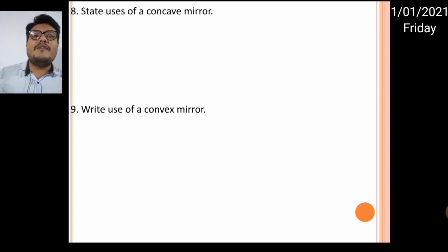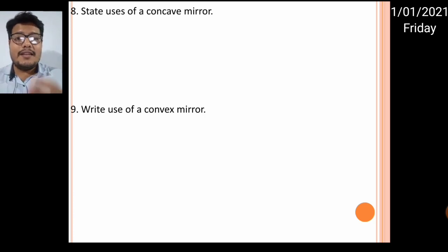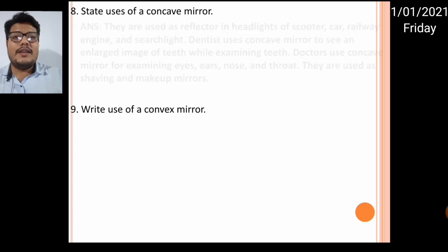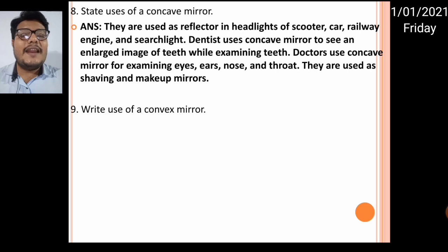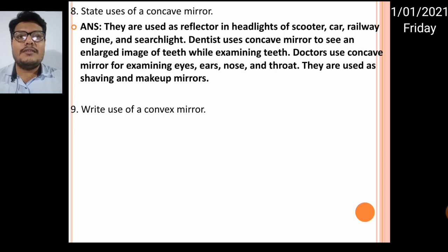State the uses of a concave mirror. Concave mirrors are used as reflectors in the headlights of scooters, cars, and railway engines. They are also used in search lights. Dentists use concave mirrors to see an enlarged image of your teeth while examining. Doctors use concave mirrors to examine the eye, ear, nose, and throat. They are also used as shaving and makeup mirrors to get a larger image.